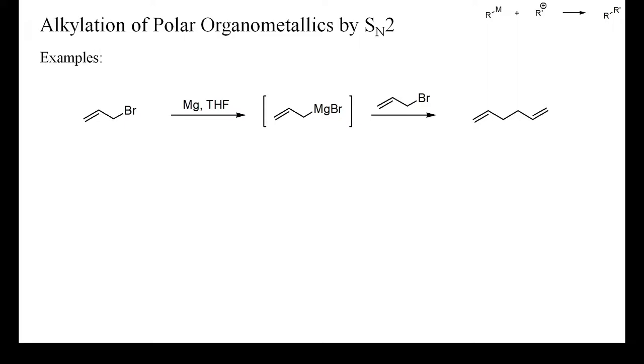Thus, allyl magnesium bromide cannot be prepared directly from allyl bromide in THF because as soon as the reagent is formed, it reacts with the starting allyl bromide. This is the so-called Wurtz reaction and it can occur even with less reactive halides. When preparing methyl magnesium iodide, for instance, about 1% of ethane is formed.